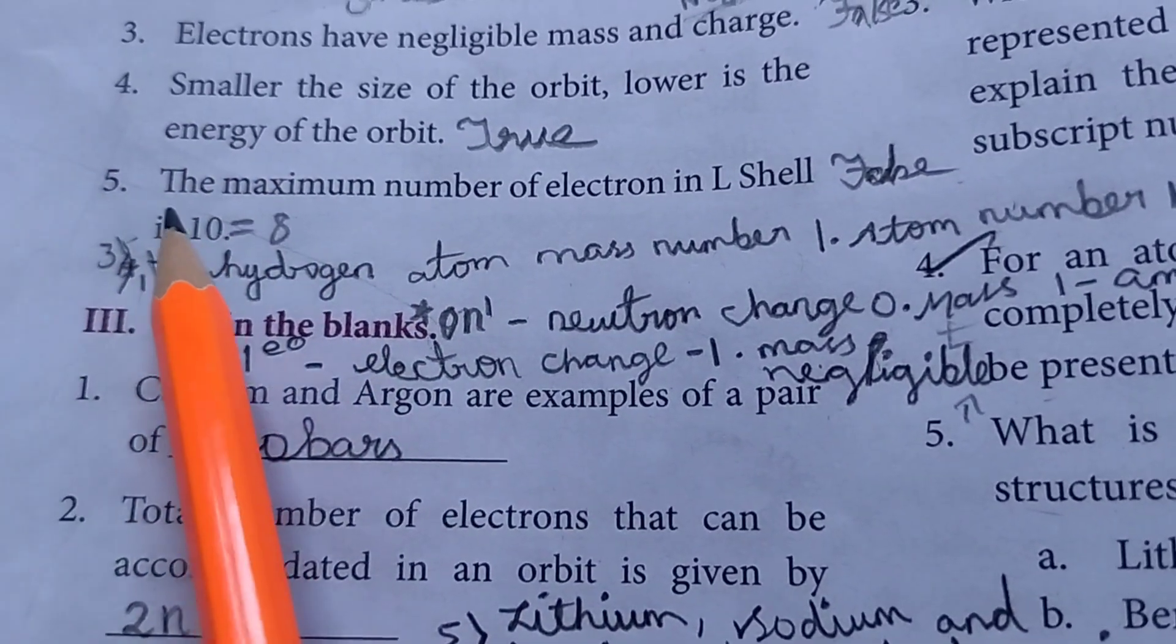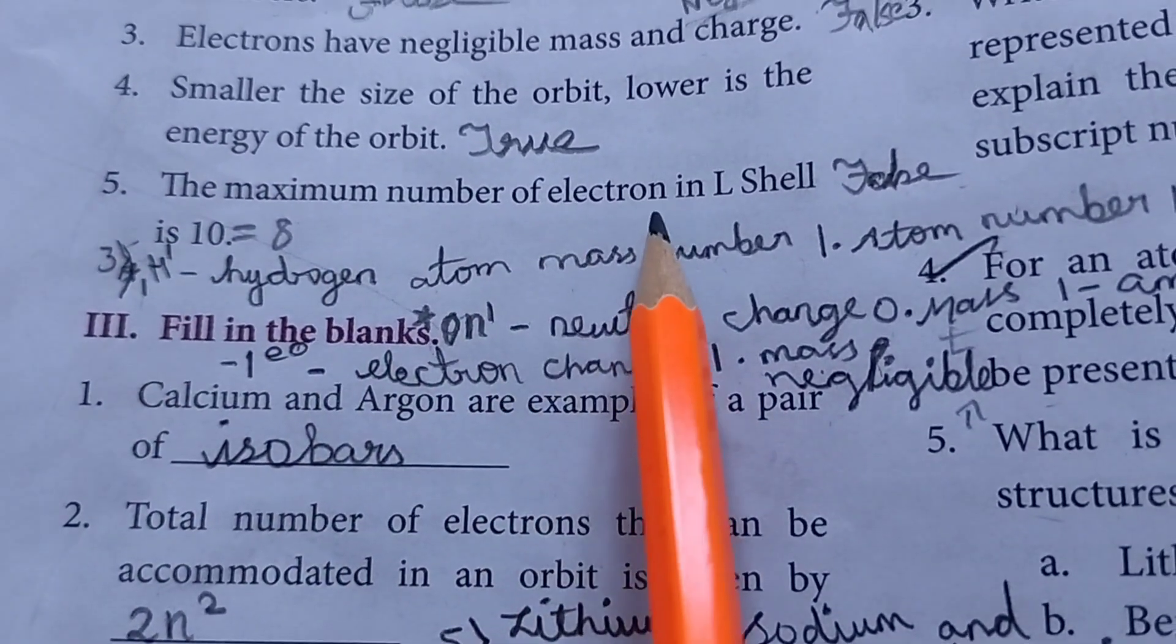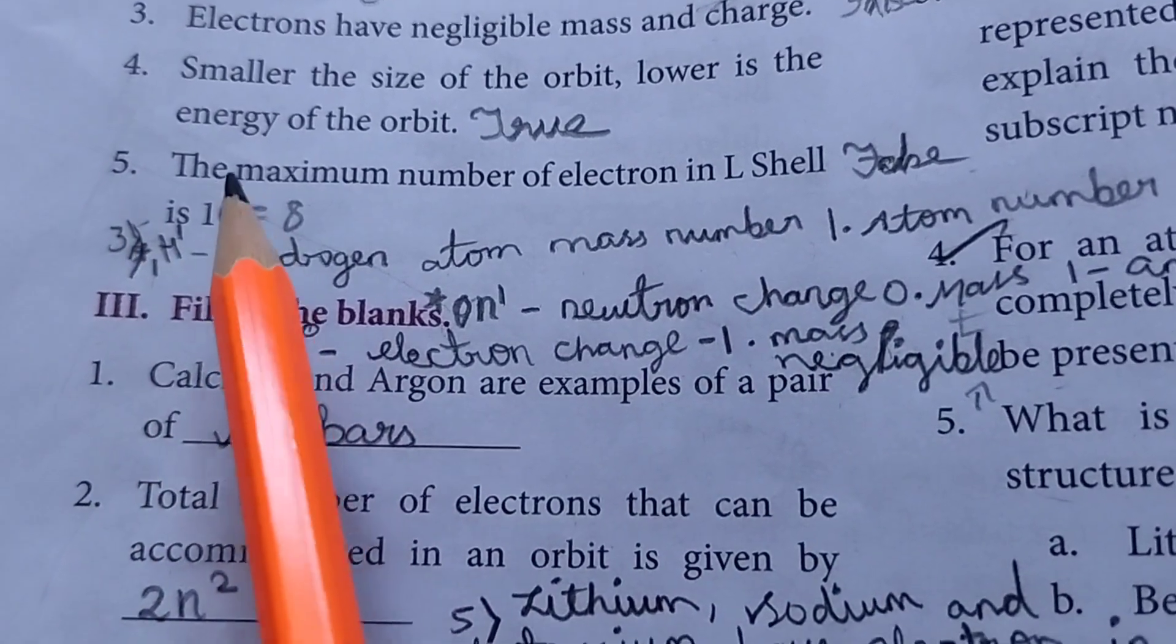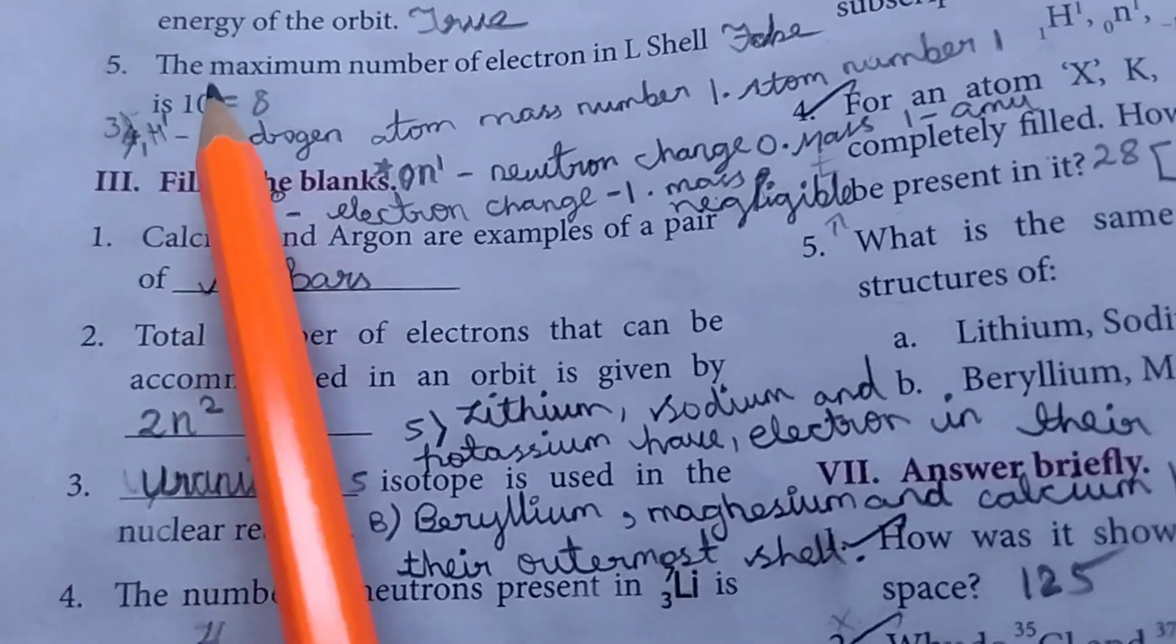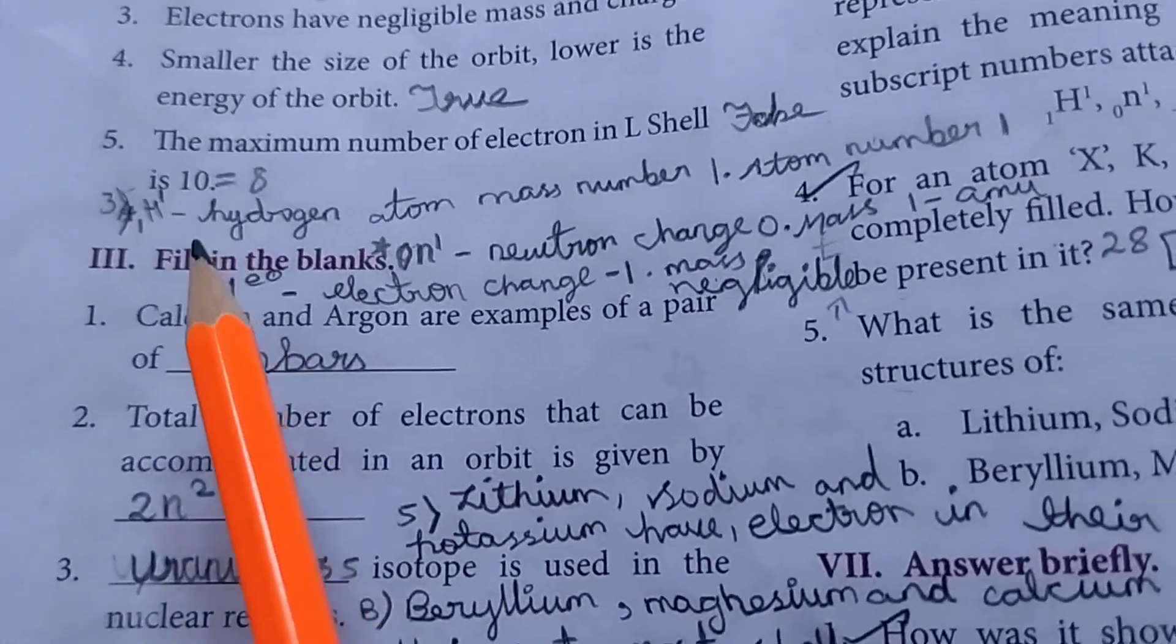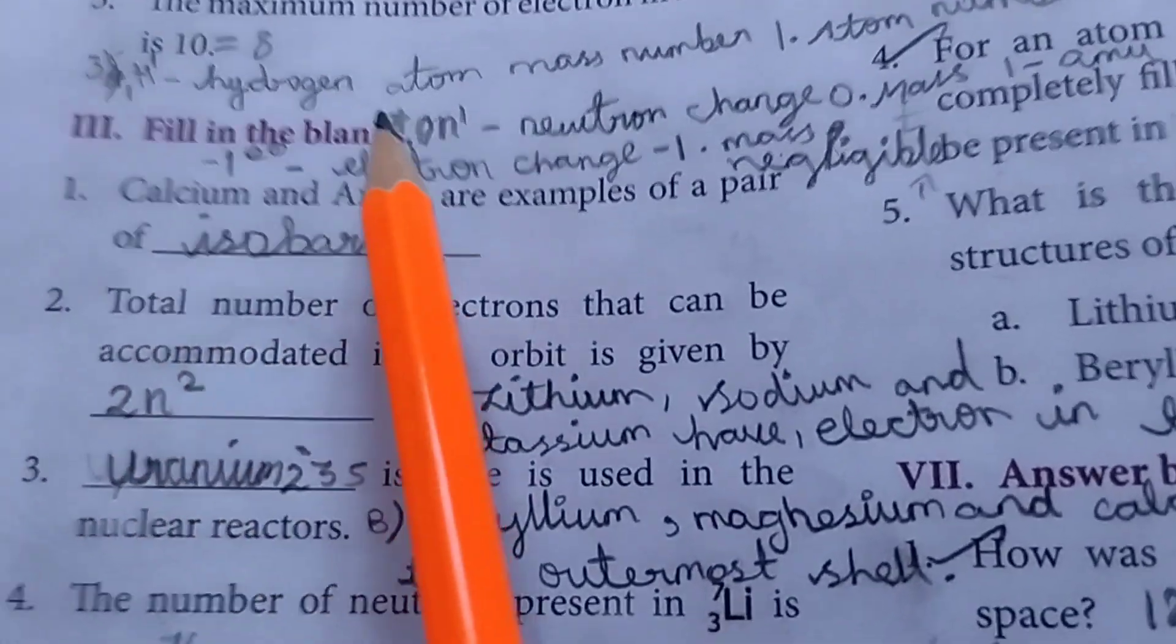Then fourth one. The maximum number of electrons in L shell is 10. The answer is false. The 10 again are 8. The answer is true. Then third Roman letter fill in the blanks.